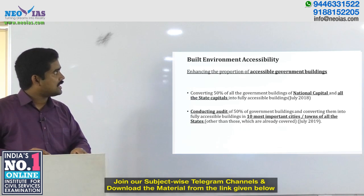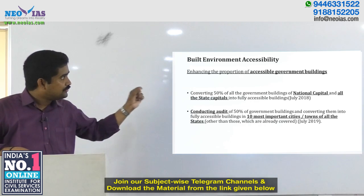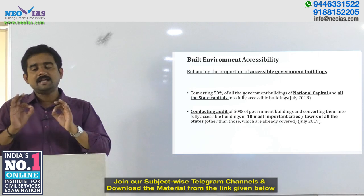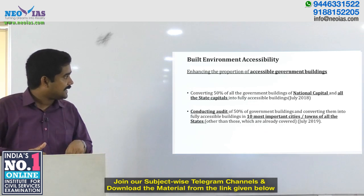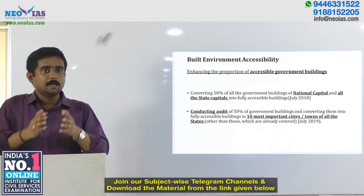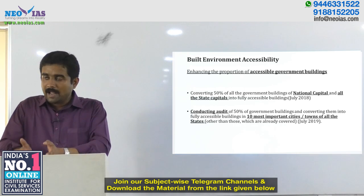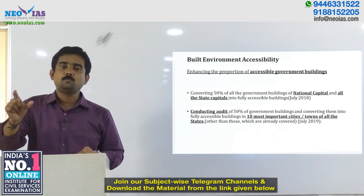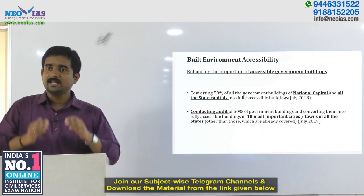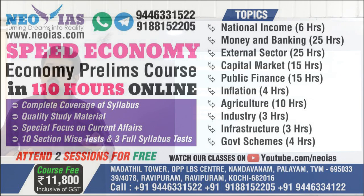Under built environment accessibility, the initial plan was to ensure 50% of all government buildings in the national capital and state capitals are made clearly accessible. An audit mechanism was also planned to ensure built-in accessibility in these buildings. Subsequently, the plan extended to identifying the 10 most important cities or towns in each state, excluding capitals, with the activity targeted for completion by July 2019.